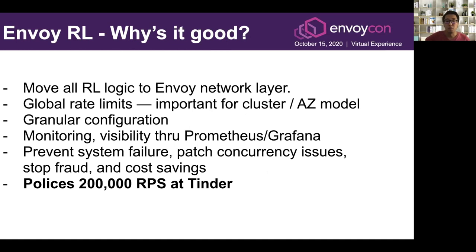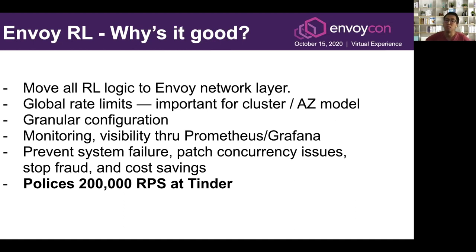Envoy rate-limiting allowed us to move all the rate-limiting logic to the Envoy layer, giving us a uniform implementation across the company and global rate-limiting where the limit is based on a global request count — really important for our cluster-per-AZ model. It offers granular configuration such as rate-limiting on multiple headers or one header or no headers, plus monitoring visibility through Prometheus metrics. Overall, we're able to prevent system failure, patch concurrency issues, and due to stopping bot traffic, we have significant cost savings. Right now it polices about 200,000 requests per second at Tinder.